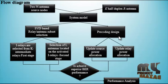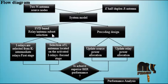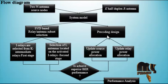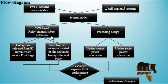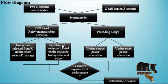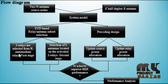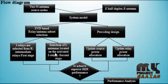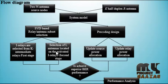The system model is subdivided into two algorithms. One is SVD-based relay antenna subset selection, and another one is pre-coding design. The SVD-based relay antenna subset selection involves singular value decomposition, which is subdivided into two stages. In the first stage, I relay nodes are selected from K intermediate relays. In the second stage, L antennas located on the activated I relay nodes are selected.